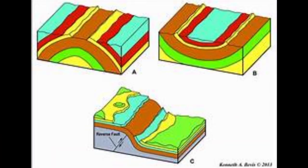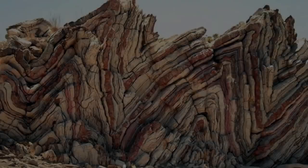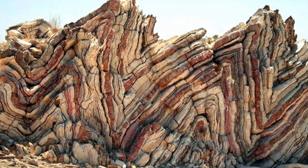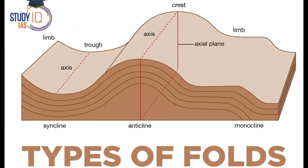Next on our list of geological map features are folds. Folds on a geological map are depicted by curved lines representing the bending or deformation of rock layers. They occur when compressional forces act on the Earth's crust, causing rocks to fold and buckle. Folds can be classified based on their shape and orientation — these can either be synclines, anticlines, or monoclines.